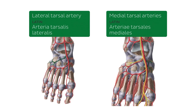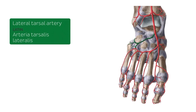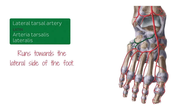These are two of the branches of the dorsal artery of the foot — the medial and the lateral tarsal arteries. For reference, the medial side of the foot is in the same direction as the big toe, and the lateral part is on the same direction as the little toe. You'll notice these arteries are projecting either laterally or medially, hence their names. The lateral tarsal artery branches off at the level of the navicular bone and runs towards the lateral side of the foot.